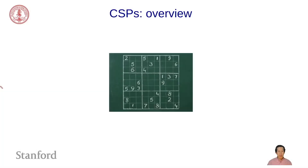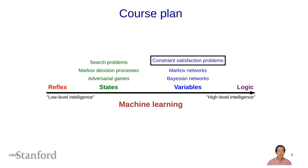In this module, I'm going to talk about constraint satisfaction problems. Before we get into that, I want to revisit where we've been in the course. We started off with machine learning applied to reflex-based models such as classification or regression, where the goal is to output a single number or a label. Then we looked at state-based models, where the goal was to output a solution path, thinking in terms of states, actions, and cost or rewards.